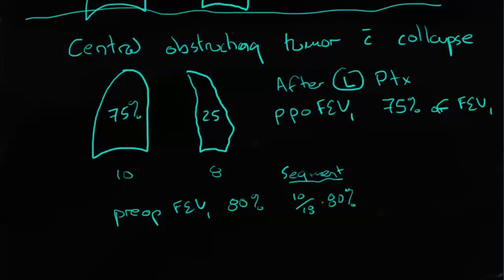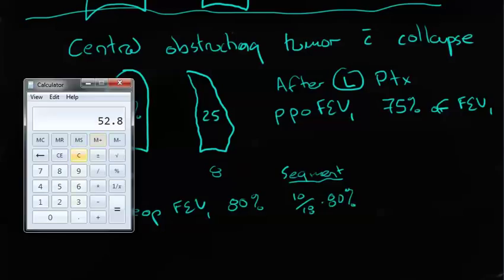we would take 10/18ths of 80%, and again using our calculator, 10 divided by 18 equals 55%. Multiply that by 80, and we're left with a 44% FEV1.